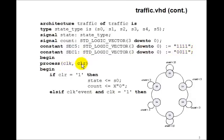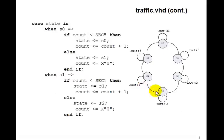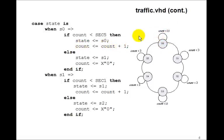We'll have a process on clock and clear — our sequential process. If clear is 1, state is S0 and count is set to zero. Else on the rising edge of the clock, we'll do our usual case statement for the state machine, also including the count. When in S0, if count is less than seconds_five — that is less than 15 — we stay in S0 and increment count. When it gets to 15, we go to state S1 and reset count to zero.